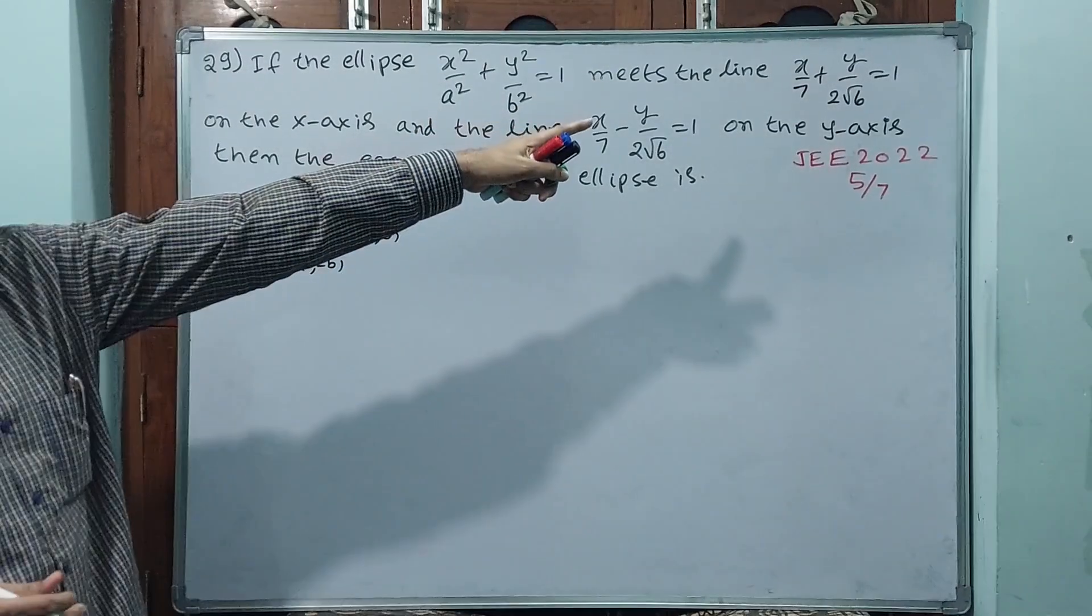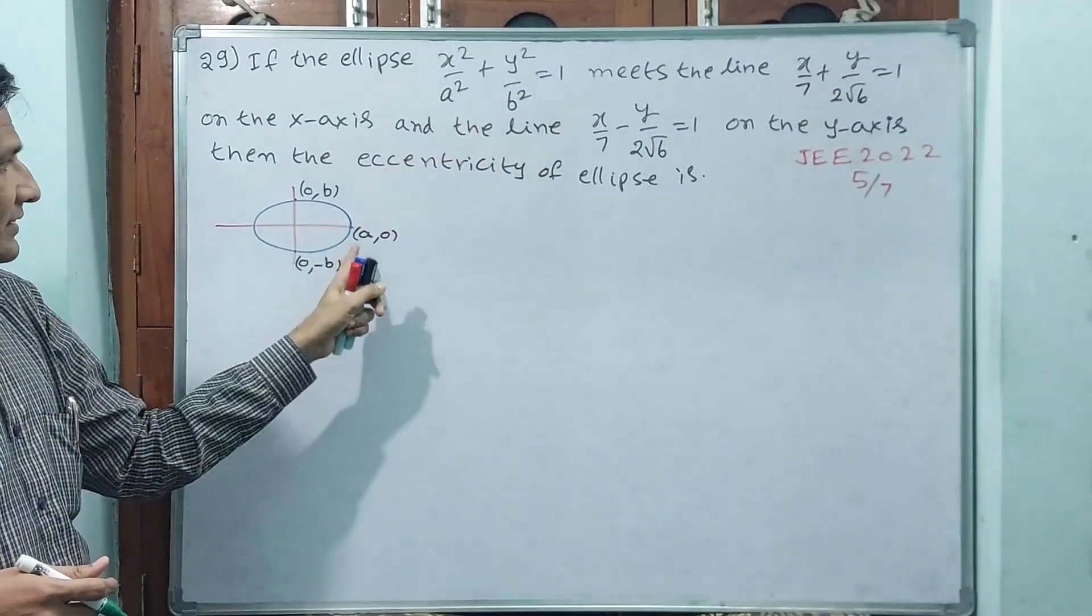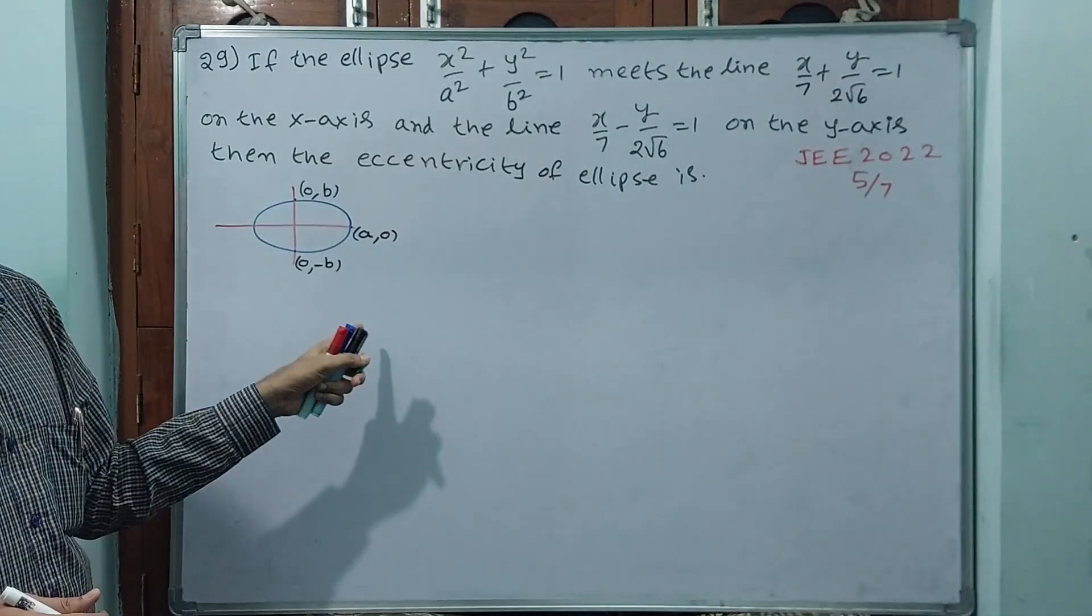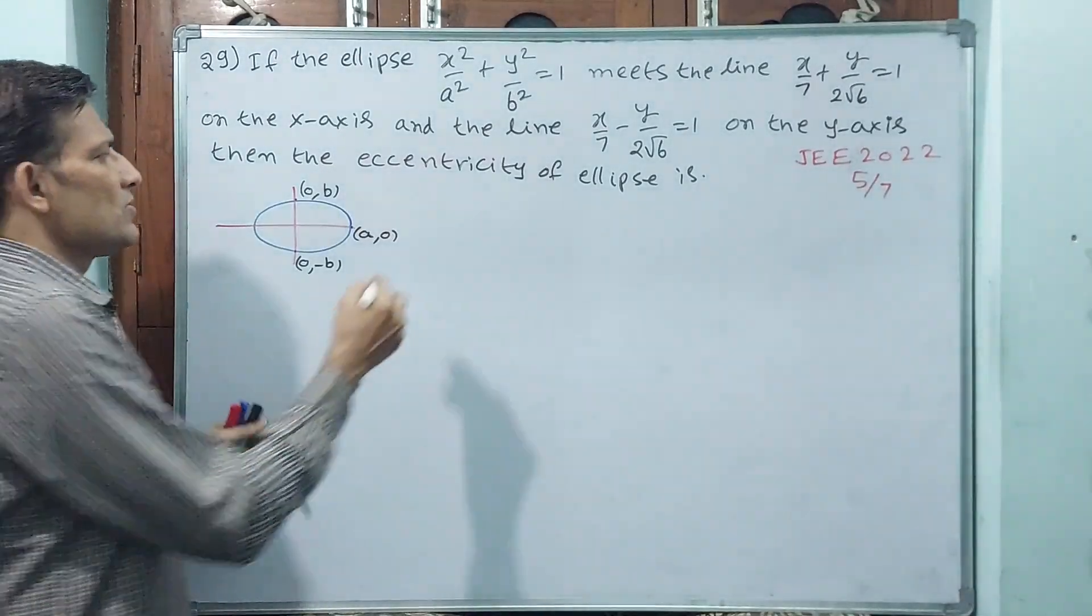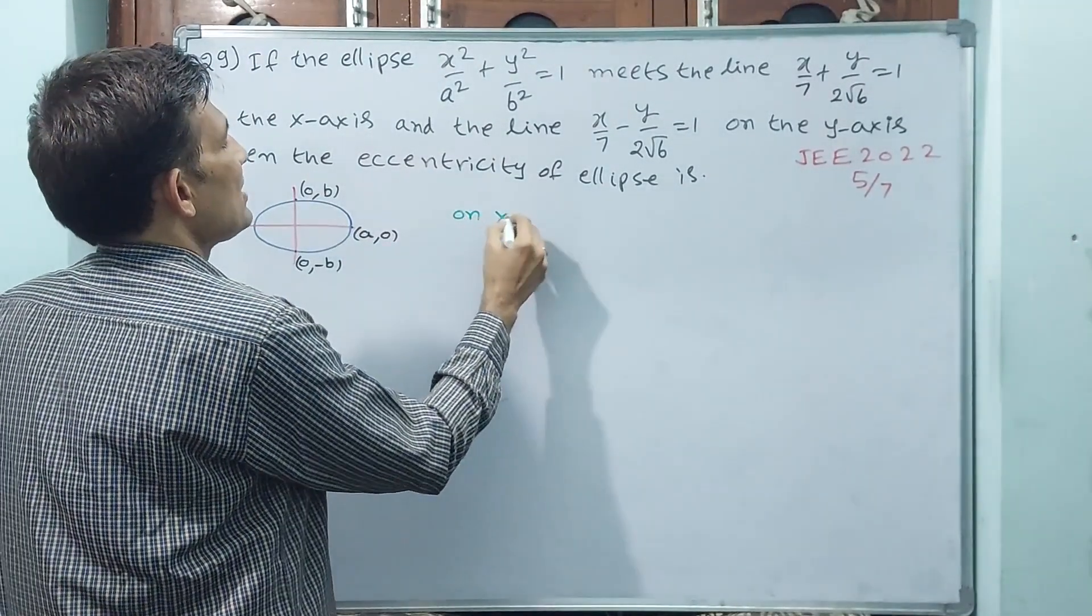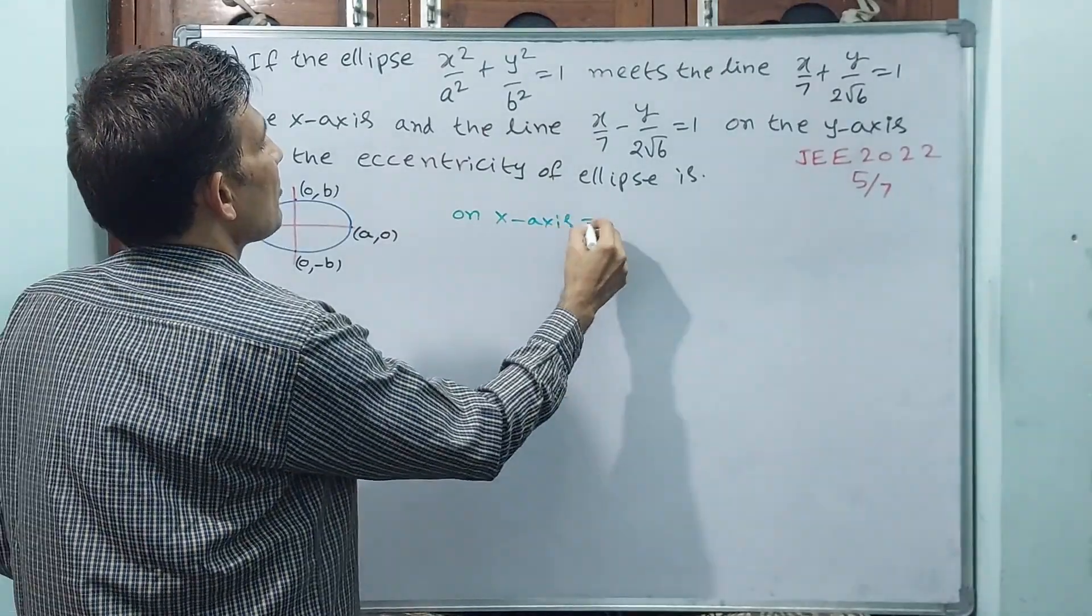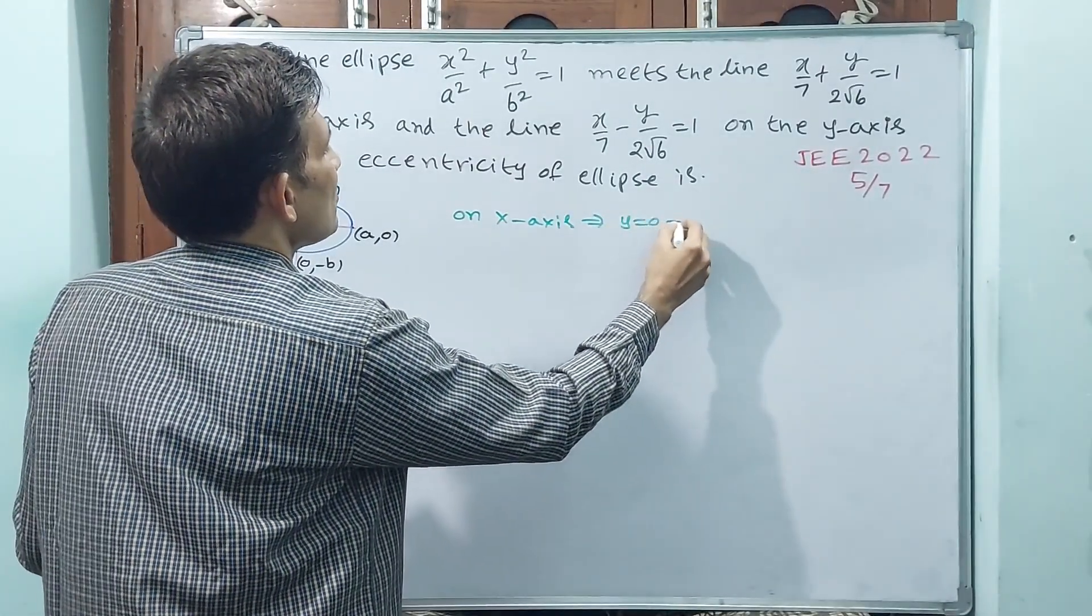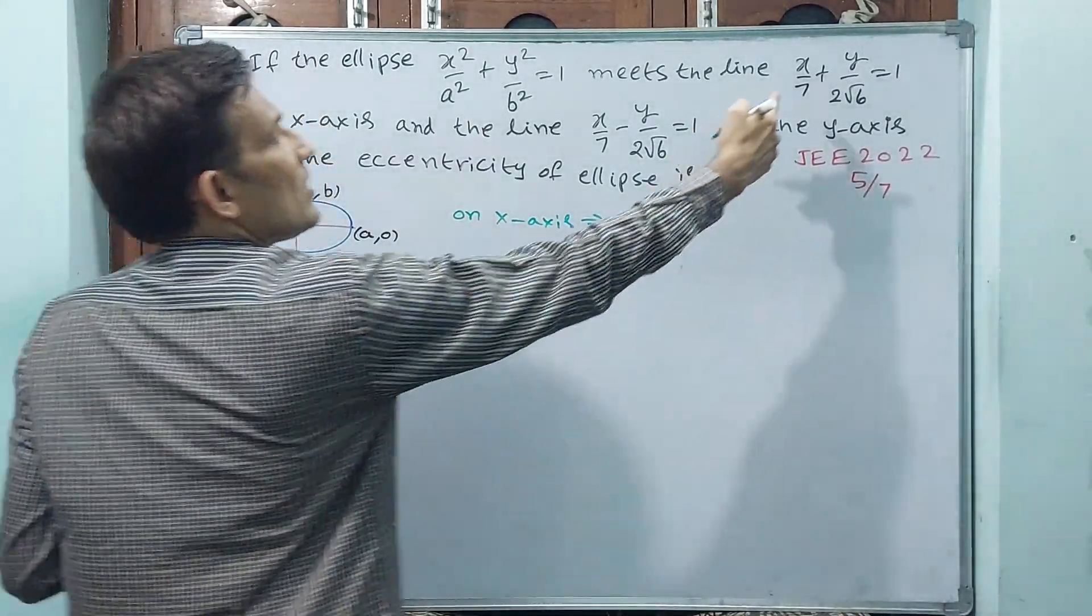Logically, first line is meeting on x-axis. On x-axis means y = 0. On x-axis implies y = 0 implies first equation.